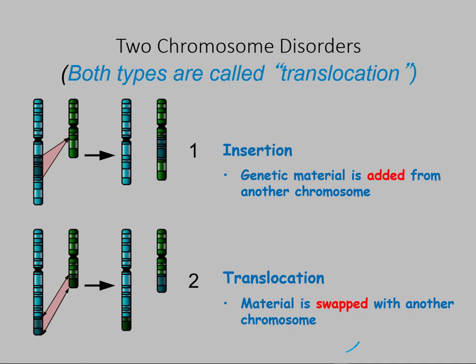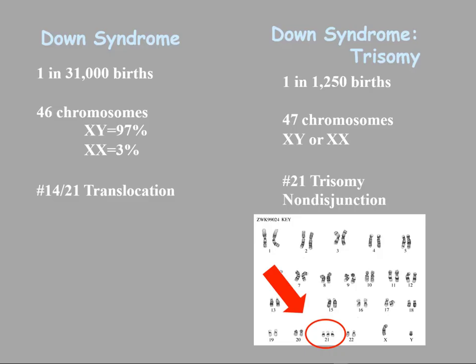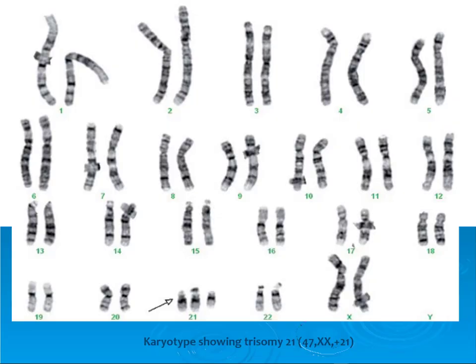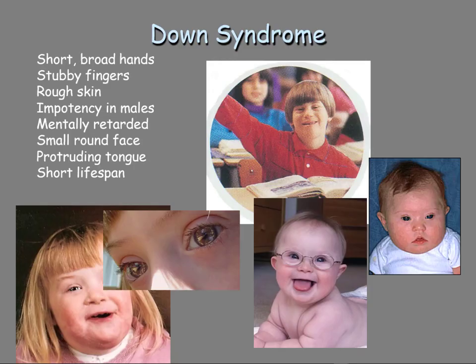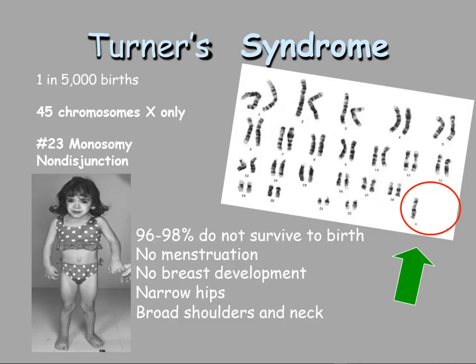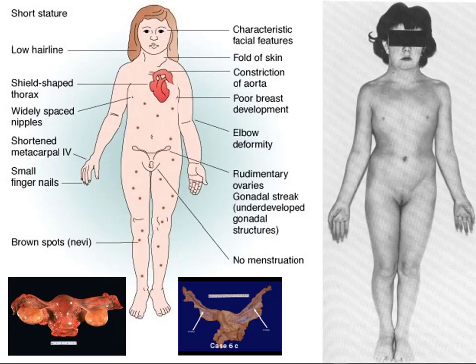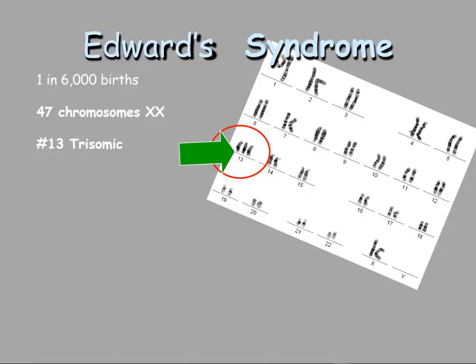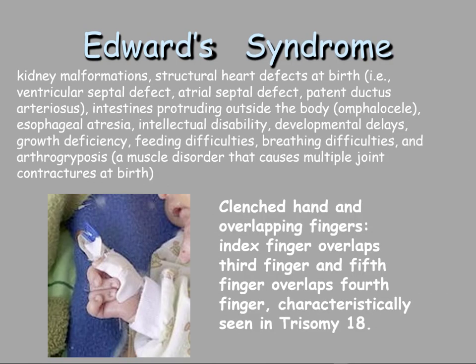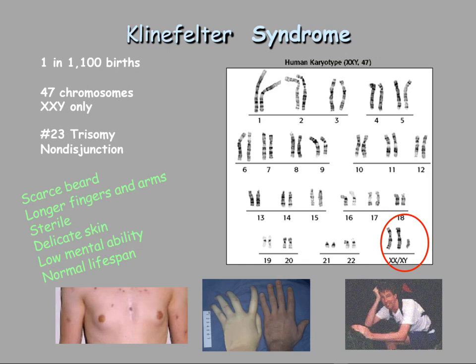Some of the disorders you may have heard of: Down syndrome, where chromosome 21 has an extra chromosome — trisomy 21. A karyotypist would use this for determination and inform the doctor. Turner syndrome, where there's just one X chromosome — monosomy X. Edwards syndrome has trisomy 13 — three chromosomes on 13 — and tends to cause more severe issues. We also have trisomy 18 to look at.